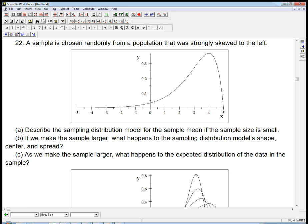Now, 22 is a contrast. A sample is chosen randomly from a population that was strongly skewed to the left. Here's something that's pretty strongly skewed to the left. The mean is probably somewhere between 2 and 4, it's a little hard to tell from the picture. But it's skewed way to the left.